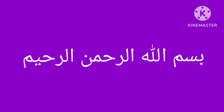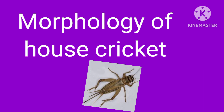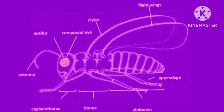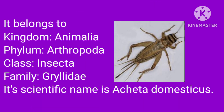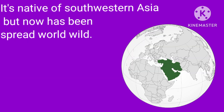Bismillah ar-Rahman ar-Rahim. Assalamualaikum. Today we are going to discuss the morphology of the house cricket. As you can see, this diagram shows all the body parts of a house cricket. House cricket belongs to Kingdom Animalia, Phylum Orthoptera, Class Insecta, Family Gryllidae. Its scientific name is Acheta domesticus. It is native to South Western Asia.